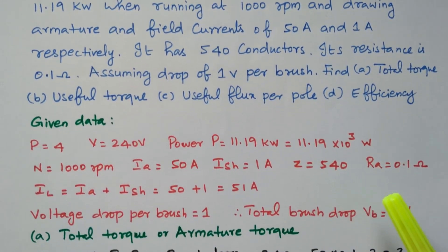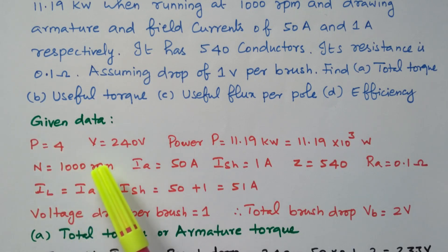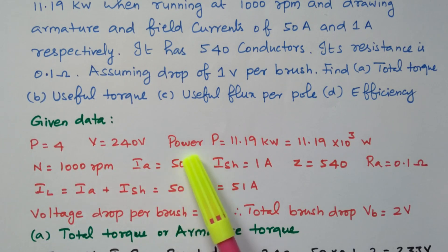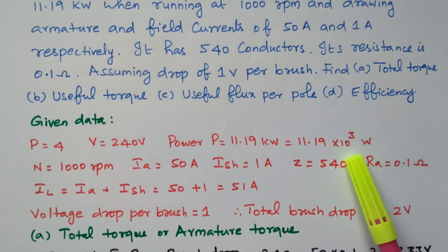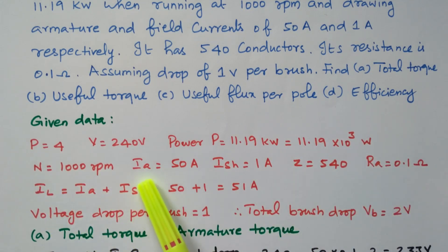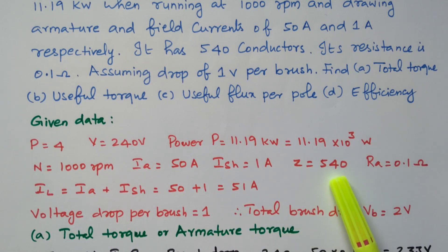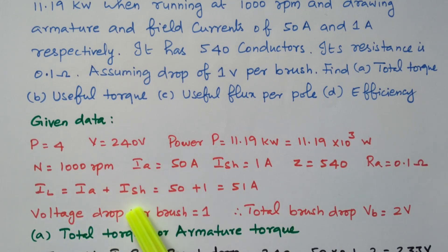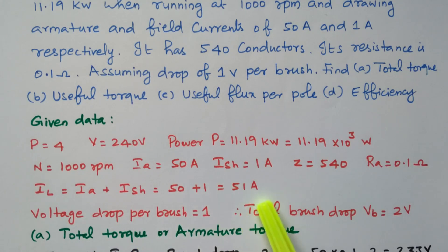Now we will analyze the given data. Number of poles P = 4, terminal voltage V = 240 V, output power = 11.19 kilowatt = 11.19 × 10³ watts, speed N = 1000 RPM, armature current IA = 50 A, shunt field current = 1 A, number of conductors = 540, armature resistance RA = 0.1 ohm. For a shunt motor, IL = IA + Ish = 50 + 1 = 51 A. Brush drop per brush is 1 V, and with 2 brushes, total brush drop = 2 V.